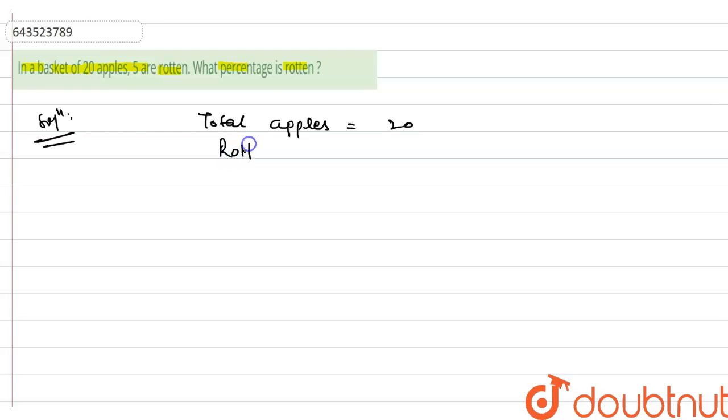Rotten apples, we have to write now rotten apples, it is equal to five. So we have to find the percentage of rotten apples.